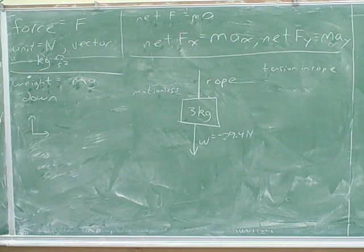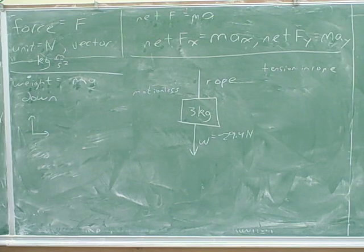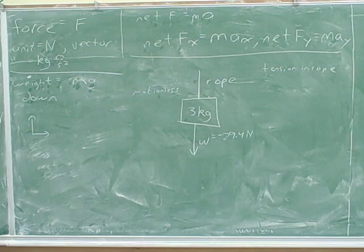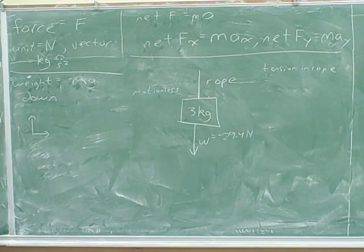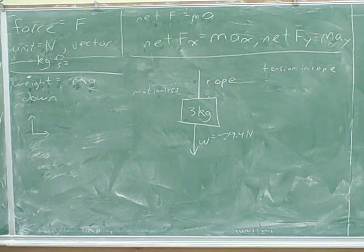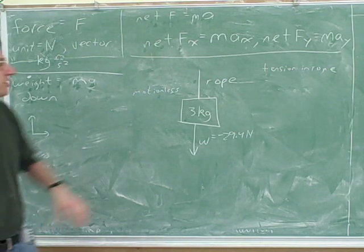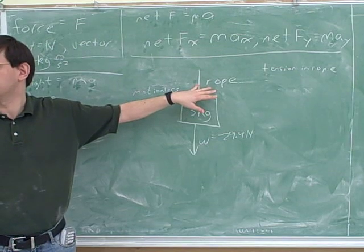Let me explain the systematic method for identifying all the forces on an object. First of all, everything has a weight. Then ask: what is touching the object? Except for the weight, all other forces have to come from things that are touching the object. The weight is kind of weird because you can feel the gravitational force of the Earth even if you're not touching it. But most forces are contact forces. So identify the weight, and then identify the force from everything that's touching the object. The only other thing touching this object is the rope.